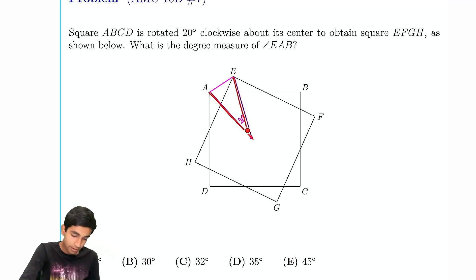So starting off, we know these two sides are equal because it's rotated. So then by isosceles angle properties, we have that both of these angles must be equal.